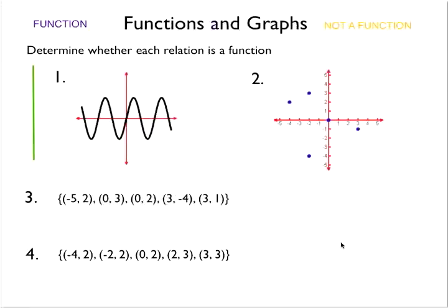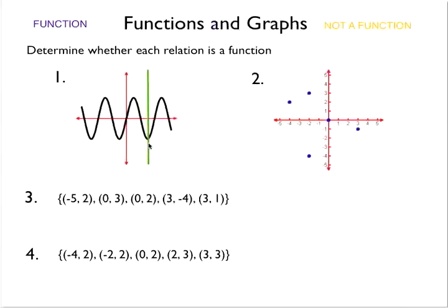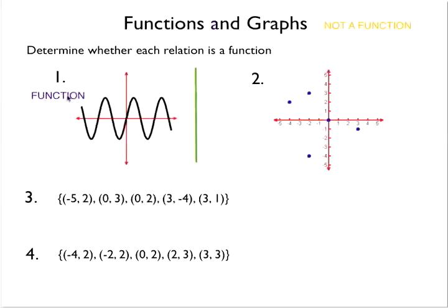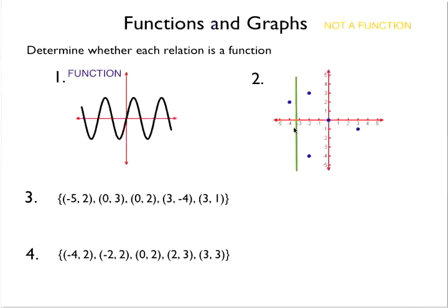On this slide we determine whether each relation is a function. For number 1 and number 2 we simply have a graph, and I'm going to pass my vertical line through. For number 1, there is no point on the graph that hits the vertical line more than once — so this is a function. For number 2, I pass the vertical line through and it just hits once at most spots, but then I find a point where it hits two points at the same time. Not a function.